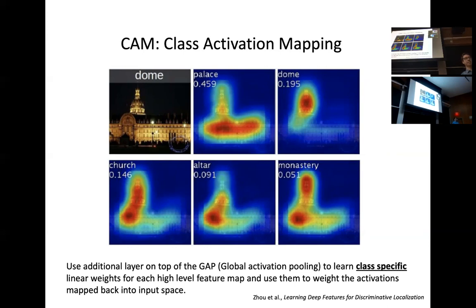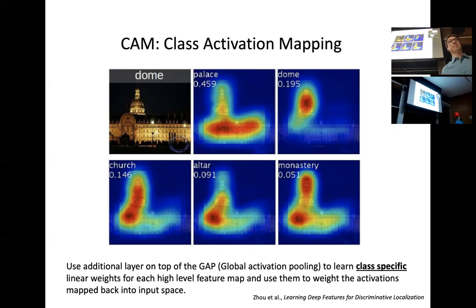Also, this method is local interpretability — for an individual picture you run through, because a different picture that also has dome as a class might use something entirely different to predict that. We can't assume it'll always use the same area — it can change for each picture.